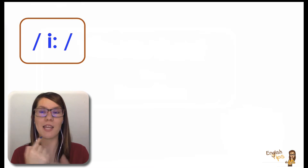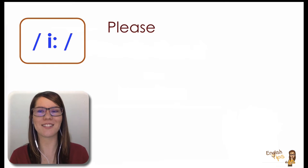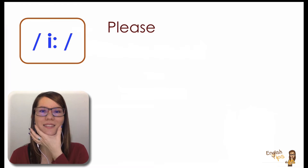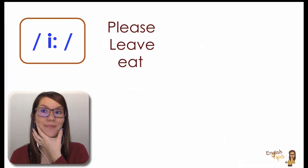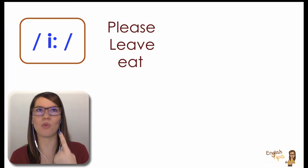So if we are going to pronounce this sound, you can see how my lips and my teeth move. I am showing my teeth as if I were smiling. So if I say a word like please, you can see the tension here: please, or leave, or eat. So this is the first and most important difference.